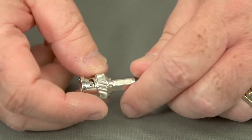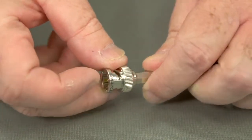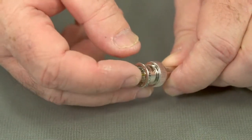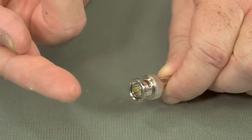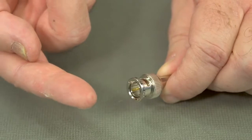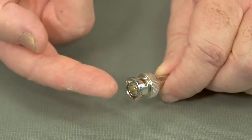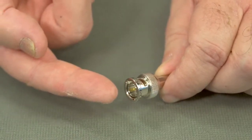Some things to look for. First of all, is the center pin through far enough? Let's give it a push with our finger and make sure that it makes an indentation on our finger. That's an indication that the center pin is indeed far enough through.